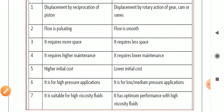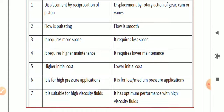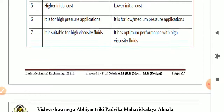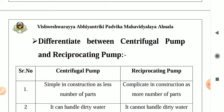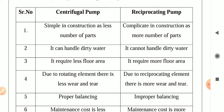So these are the points differentiating reciprocating pump and rotary pump. This is mostly asked in the examination for four marks. Next difference is differentiate between centrifugal pump and reciprocating pump. First point: centrifugal pump is simple in construction and has less number of parts. Reciprocating pump is complicated in construction and has more number of parts.